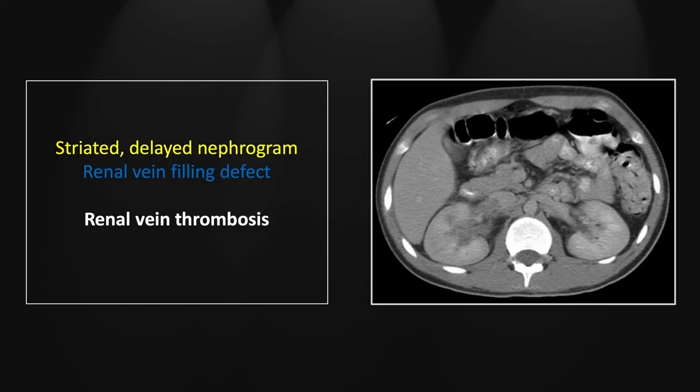This is a patient that presented with a fever, right flank pain, and dehydration. Note the heterogeneity of the right nephrogram and the slight delay relative to the left kidney.